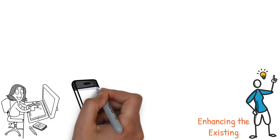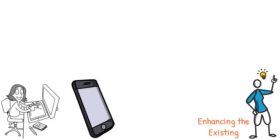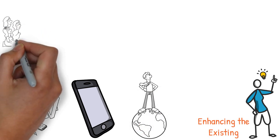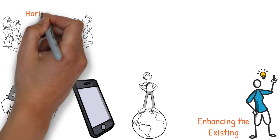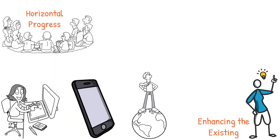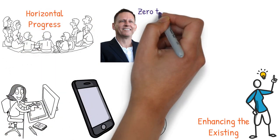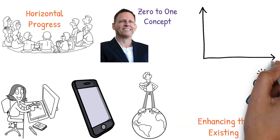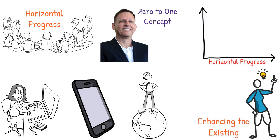Consider smartphones. Their invention exemplified vertical progress, transitioning from a world without to one with them. Their distribution to new markets represented horizontal progress. This ties into Thiel's 0 to 1 concept. On a coordinate system, the x-axis denotes horizontal progress, going from 1 to n, while the y-axis symbolizes vertical progress, going from 0 to 1.